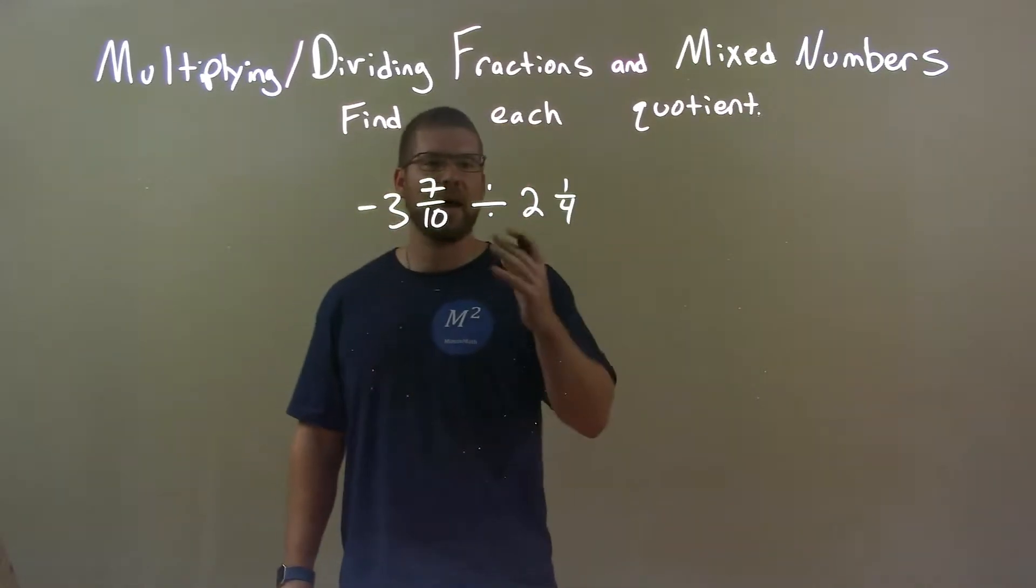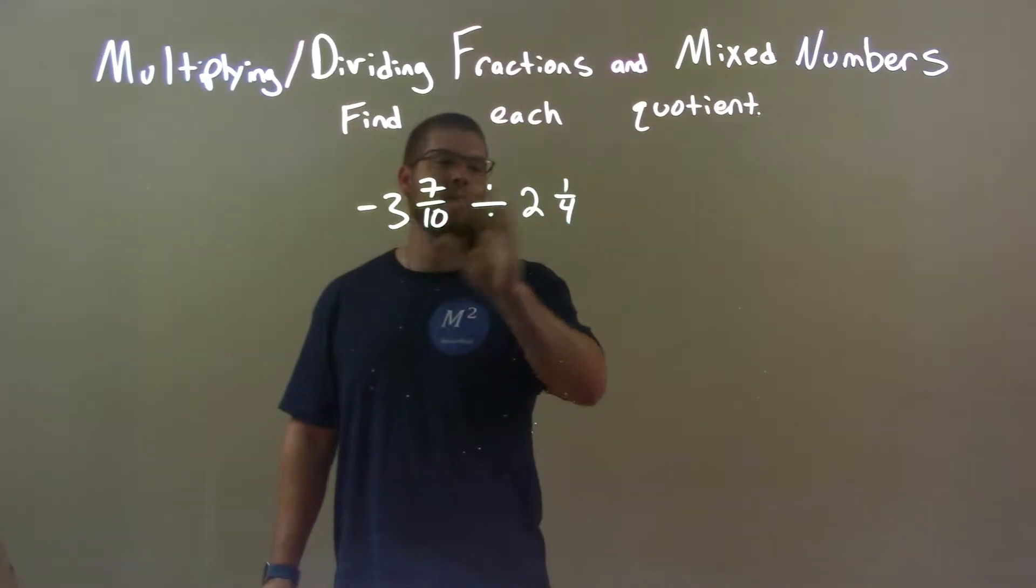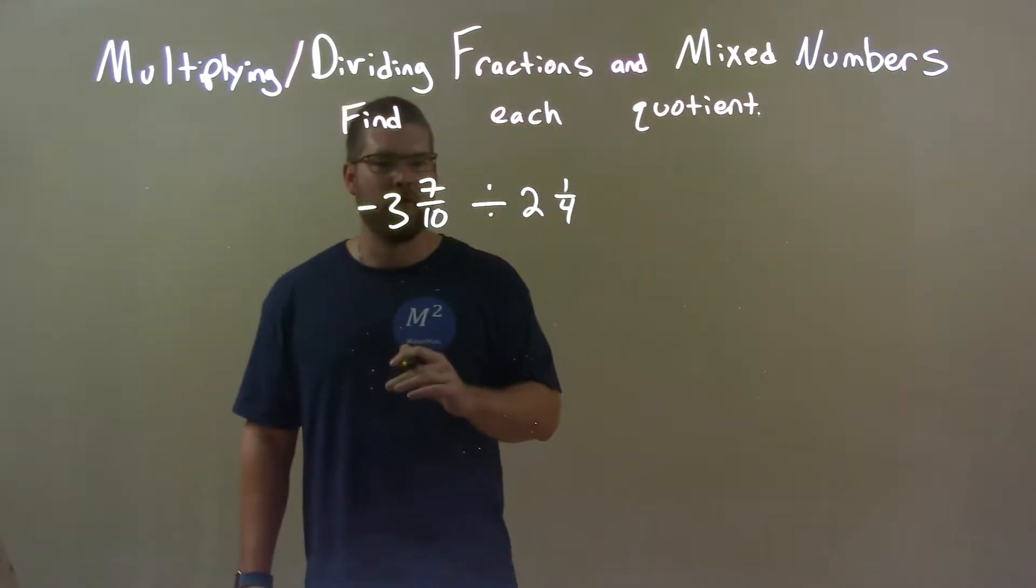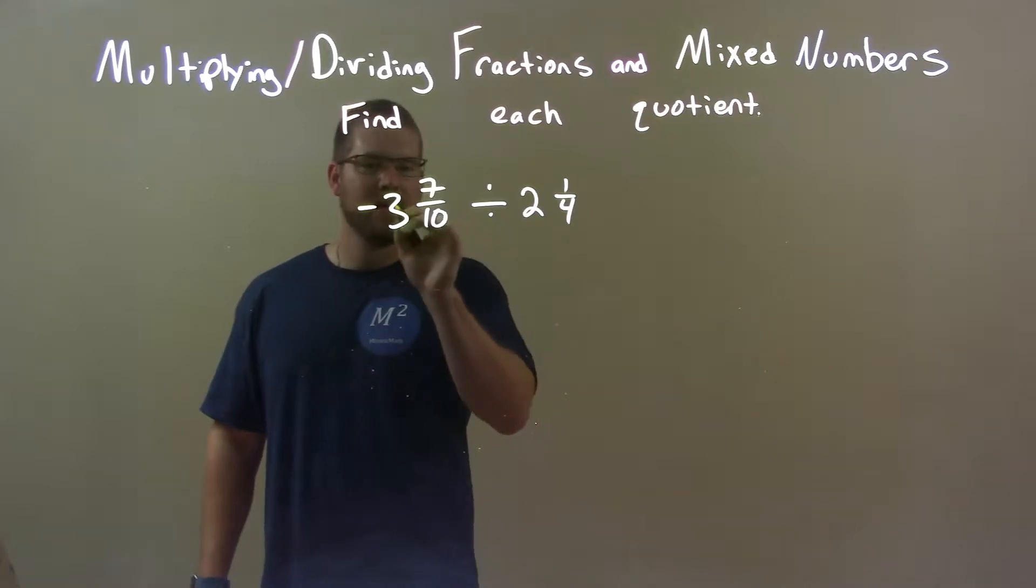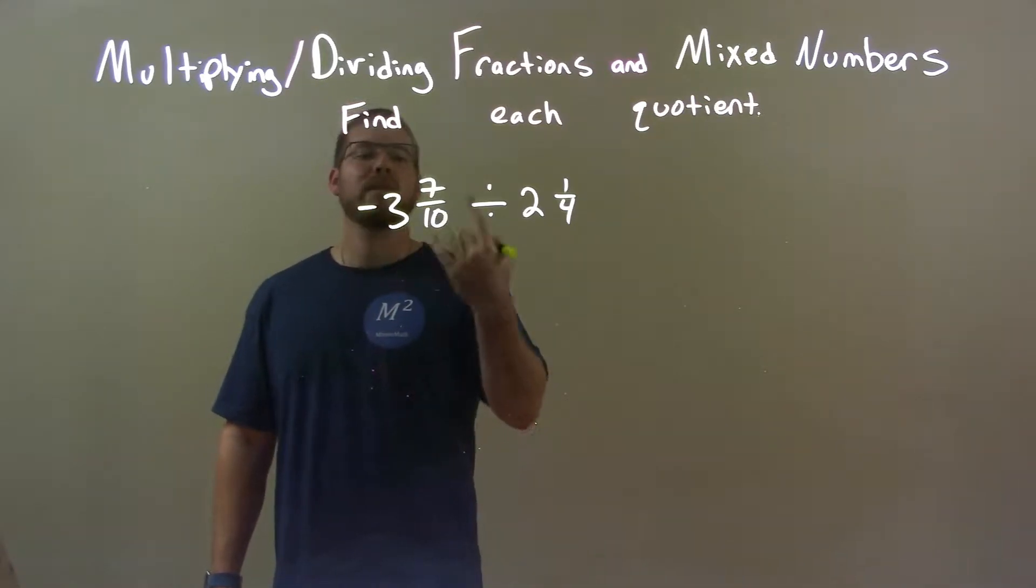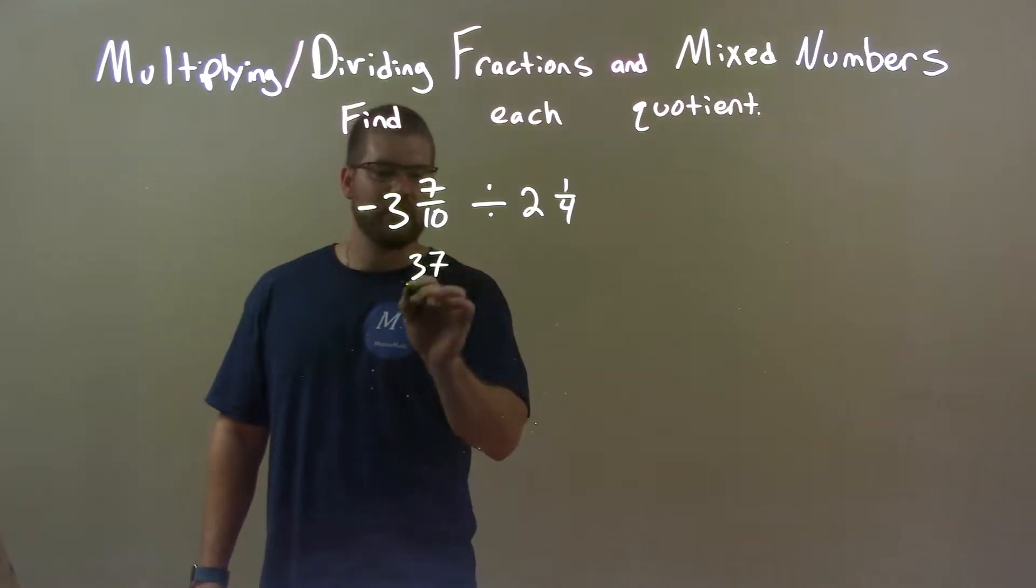I prefer improper fractions, so let's convert that. 10 times 3 is 30, plus 7 is 37 over 10. Don't forget the negative.